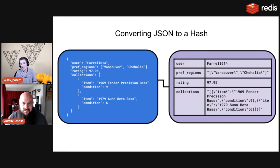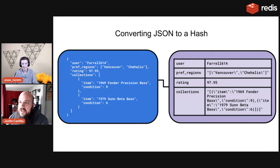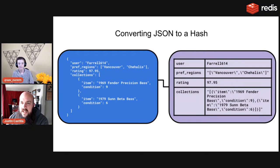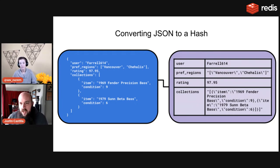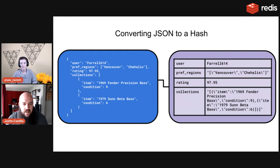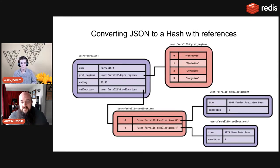With Redis there's more than one way to do a thing. In the hash, pref_regions and collections are serialized values — a serialized list and a serialized list of objects. That's not a problem, but you still have to deserialize them into native data types: pref_regions into an array, collections into an array of objects. It's not hard, but it's still not as fast as it could be.